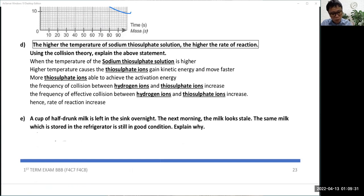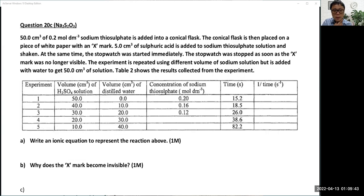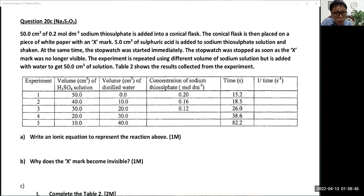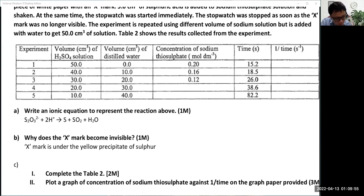A cup of half-drunk milk left in the sink overnight, next day the milk is spoiled. Same milk, you put inside refrigerator, it's in good condition because lower temperature, the bacterial will have lower activities. The milk turning bad will be slower, lesser rate. Then you try this question. The X is covered by the yellow precipitate, but the main thing is the graph here.